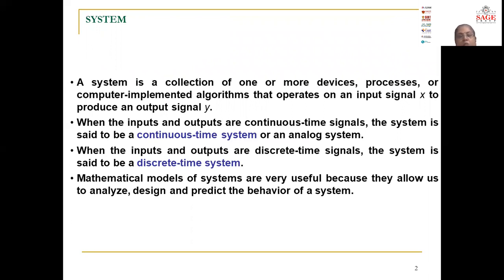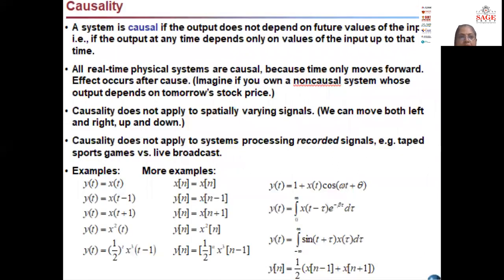When the input and output are continuous time signals, the system is known as a continuous time system or an analog system. When the input and outputs are discrete time signals, the system is said to be a discrete time system. Mathematical models of systems are very useful because they allow us to analyze, design, and predict the behavior of the system.